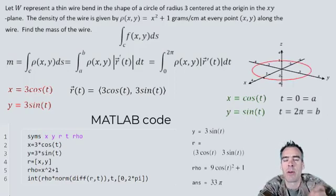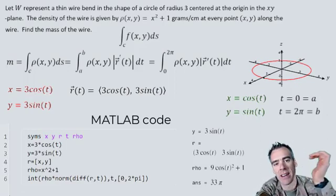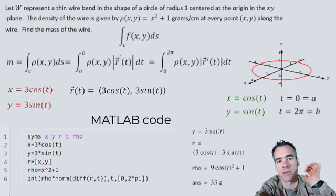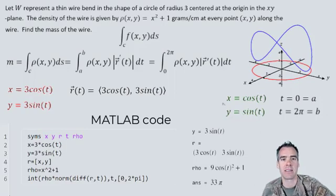Now imagine that z-axis, instead of being a height in three space, represents the density of that wire at each of those points on the wire. So if we went ahead and plotted that out, that height, it would kind of look like this.